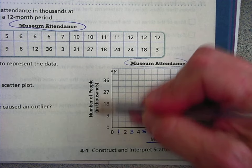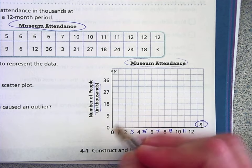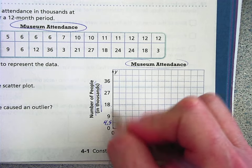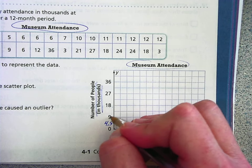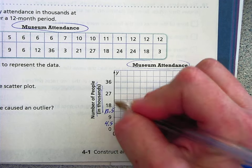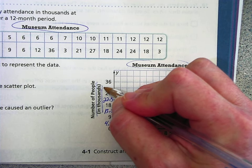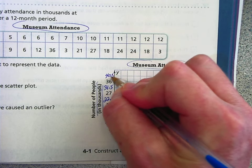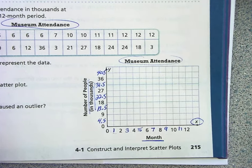Now, your Y axis is the number of people in the thousands. So in between zero and nine, that's four and a half. So every line in this graph is counting by four and a half. So that would be 13 and a half, 22 and a half, 31 and a half, 40 and a half. So you have to make sure that you look to see how they're counting.